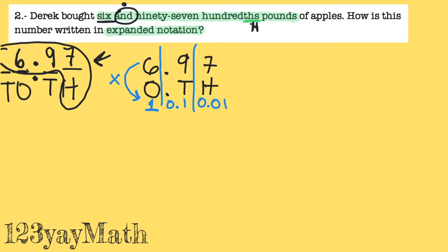And you're going to multiply this to get the expanded notation. As simple as that. So let's start with the same. Open parenthesis, six times one, close parenthesis. Plus this times this, nine times 0.1.